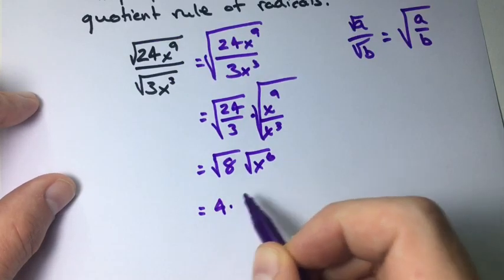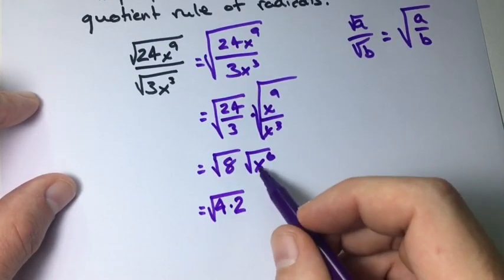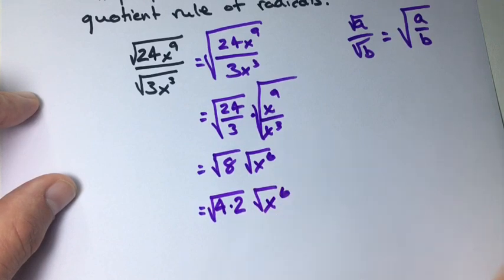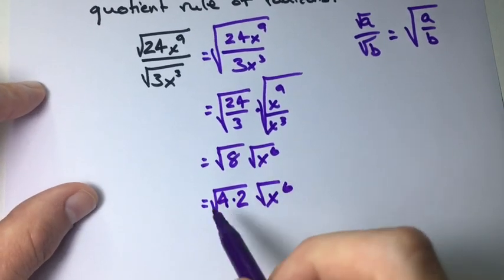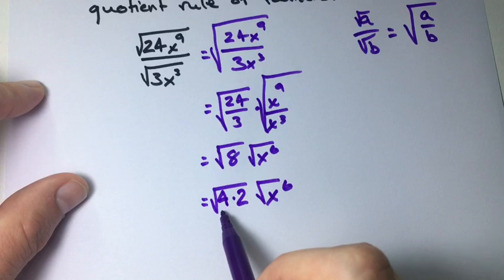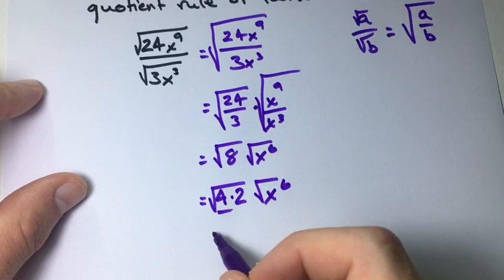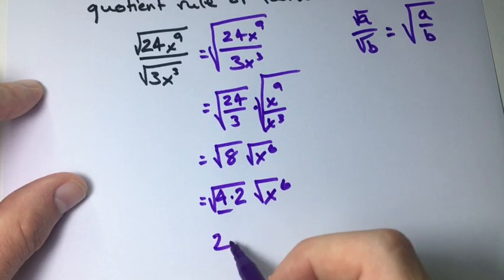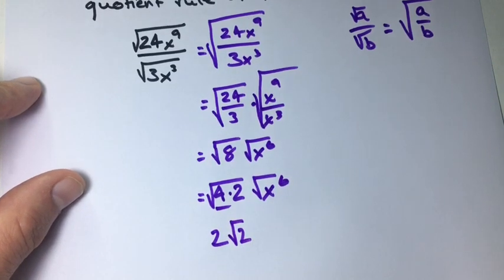So 4 times 2 times x to the 6. Now since 4 is a perfect square, we're just going to take the square root. 2. 2 is not, so we're going to leave the 2.